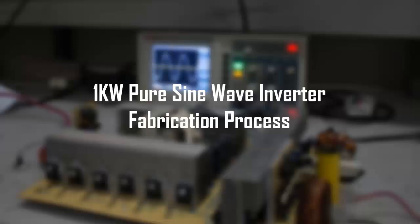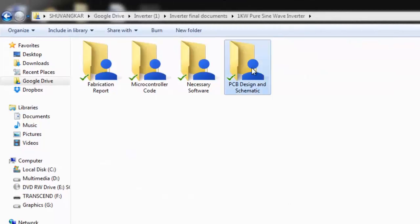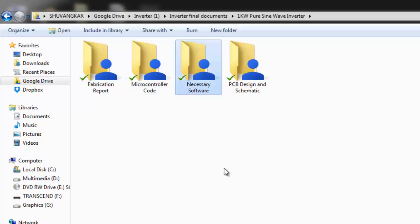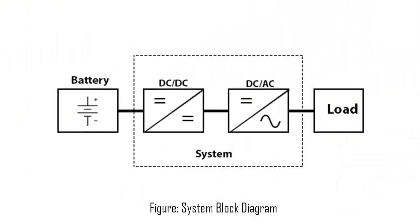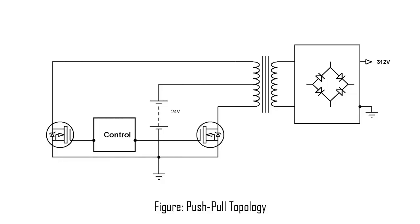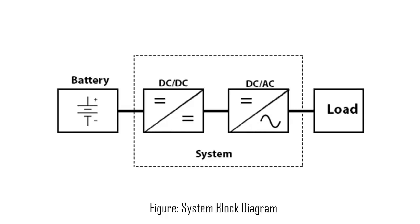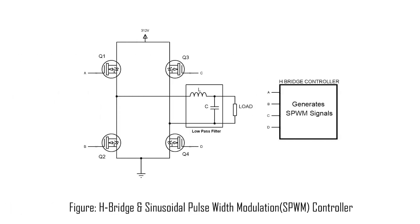Now step by step I will demonstrate the fabrication process of 1kW pure sine wave inverter. All the PCB designs and detailed fabrication process report are included with the project files. The full system is two stages: number one DC-DC boost converter which boosts 24V DC voltage into 312V DC voltage. We selected push-pull topology for this purpose. And number two DC-AC converter which inverts the 312V DC voltage into single phase 220V AC voltage using sinusoidal pulse width modulation method.